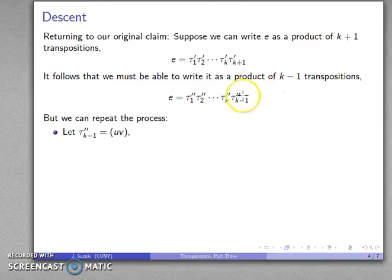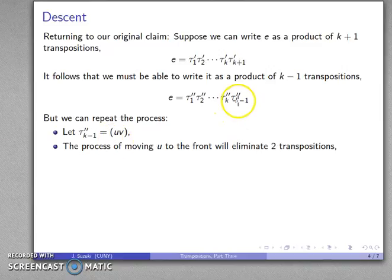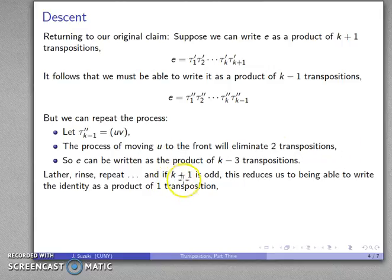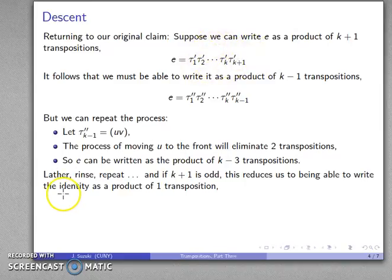Lather, rinse, repeat. I can take that last transposition u, v, and move u to the front — or at least start to — but somewhere along the way I'll eliminate two transpositions, and now I can write e as a product of k minus 3 transpositions, and I'll repeat the process. Our assumption was that k plus 1 was actually an odd number, which means that if I continuously eliminate two transpositions, eventually I'll reduce this down to the identity as a product of one transposition, which is impossible because a single transposition is not the identity. And there's our proof.